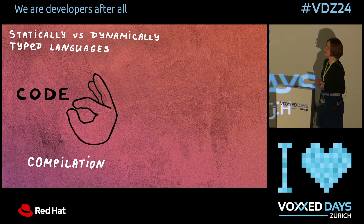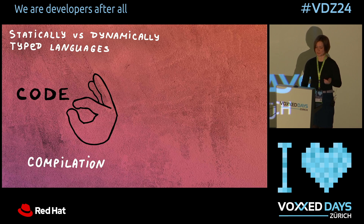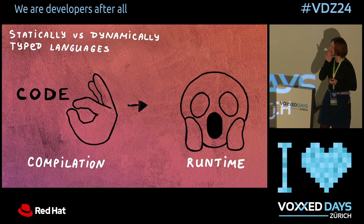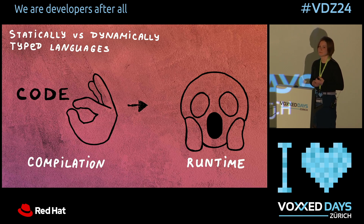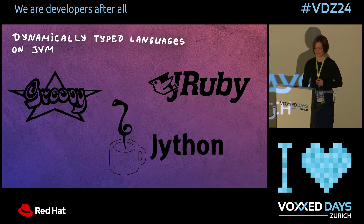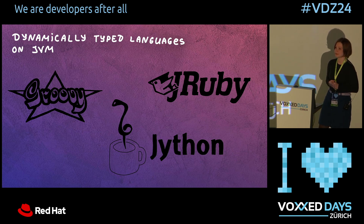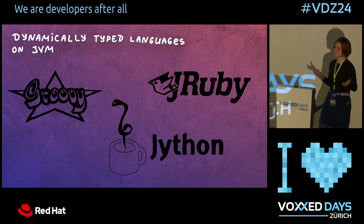That guarantees that during runtime there will be minimum surprises if something funky happened with the types. There are also dynamically typed languages where in the code there might be no types mentioned at all. They are not checked at compile time, but during runtime there might be situations where we check that the values actually have the types that are expected — and if something is wrong, it will crash at runtime.